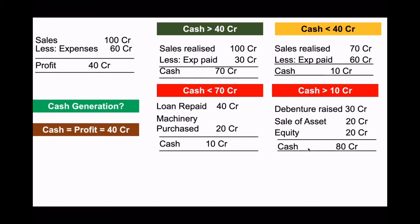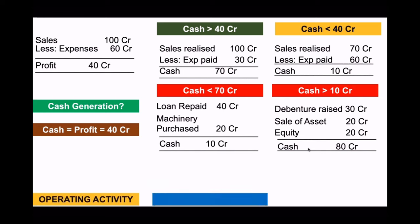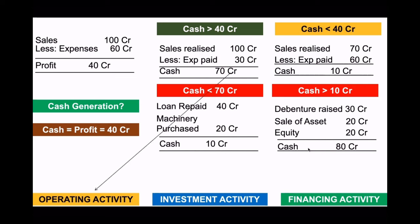So the total position becomes 80 crore. What we have to understand is that in business, cash is not generated merely by profit — it comes from various activities. We call them cash flows from operating activity, cash flows from investment activity, and cash flows from financing activity. The 70 crore is cash flow from operating activity; the 40 crore loan repaid is financing activity; the machinery purchase of 20 crore is investment activity; the debenture of 30 crore coming in is financing activity; and selling assets of 20 crore is investment activity.